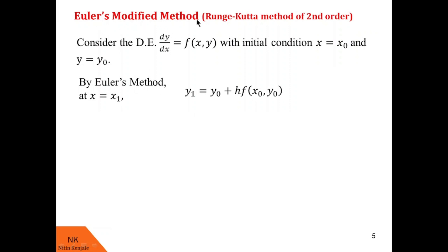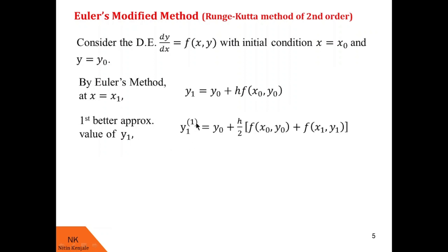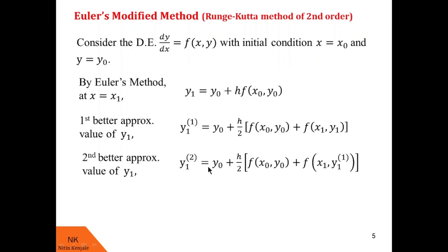By Euler's modified method, we find better approximate values of y1 obtained by Euler's method. The first better approximate value of y1 is given by: y11 = y0 + (h/2)·[f(x0, y0) + f(x1, y1)]. Here y11 represents the first better approximate value of y1. The second better approximate value is: y12 = y0 + (h/2)·[f(x0, y0) + f(x1, y11)].